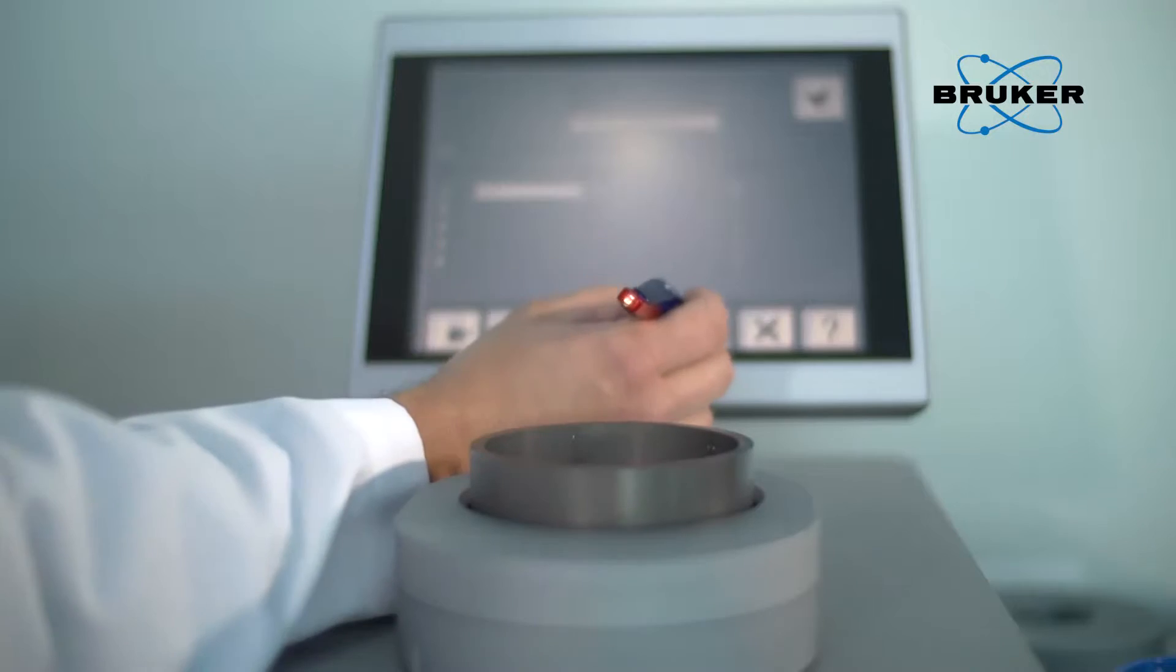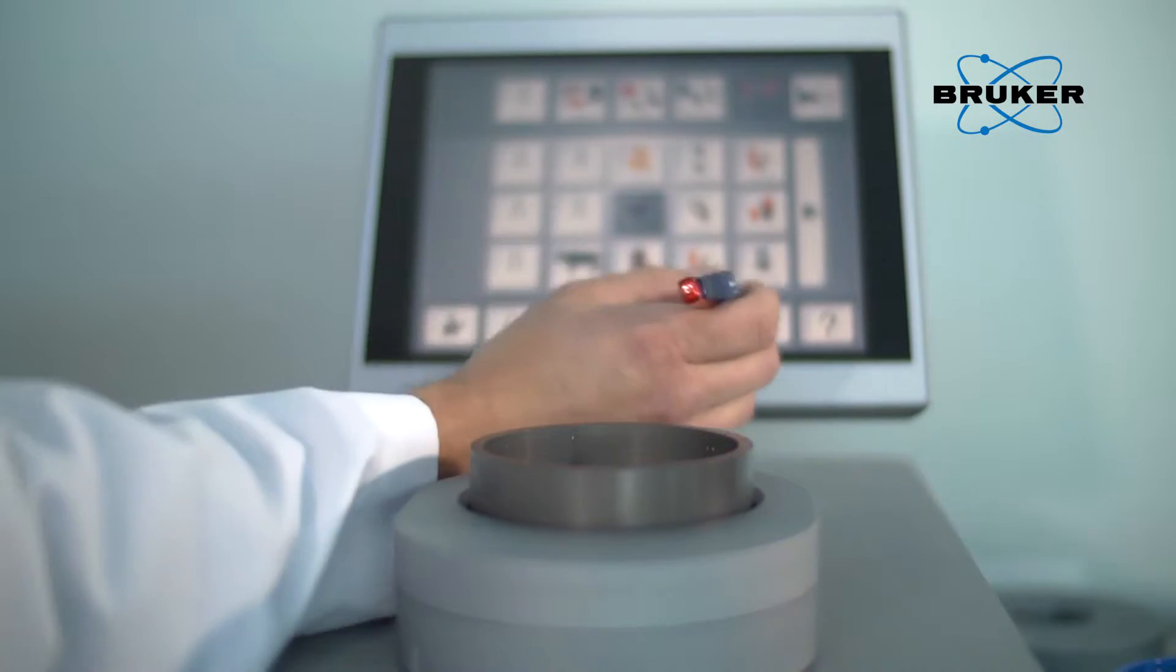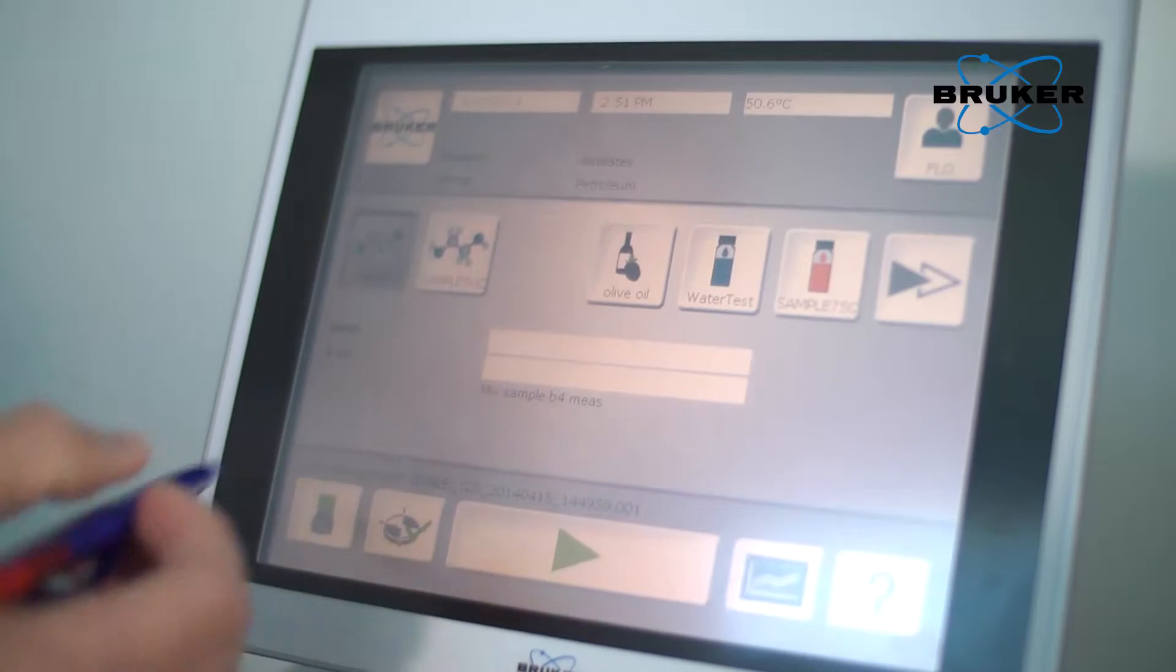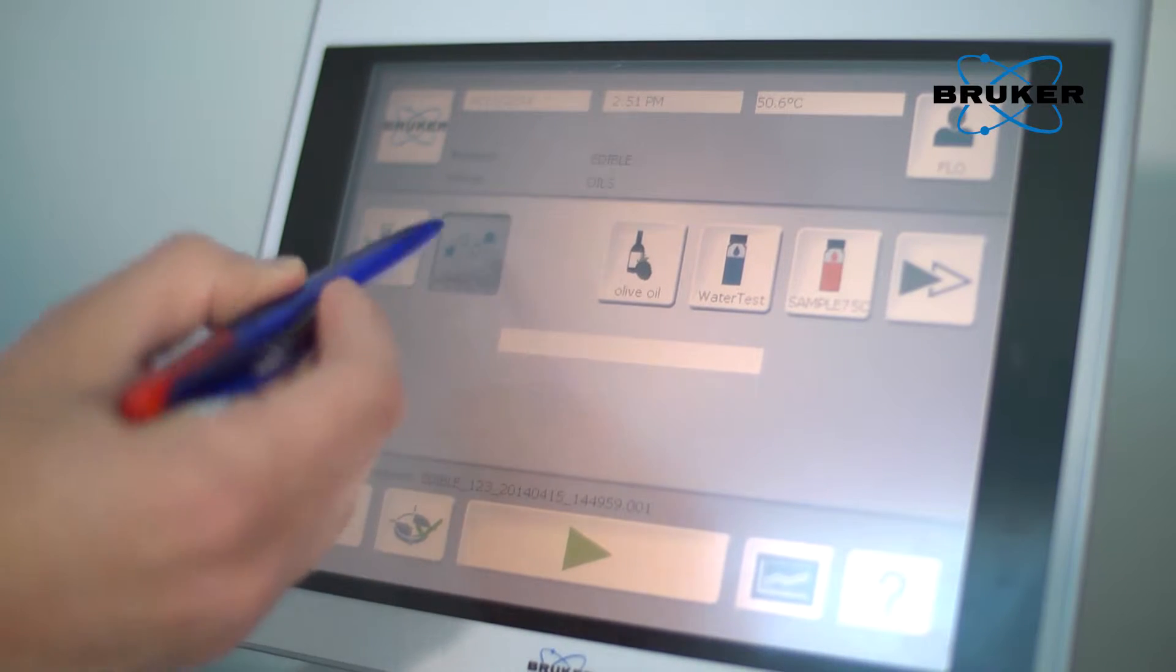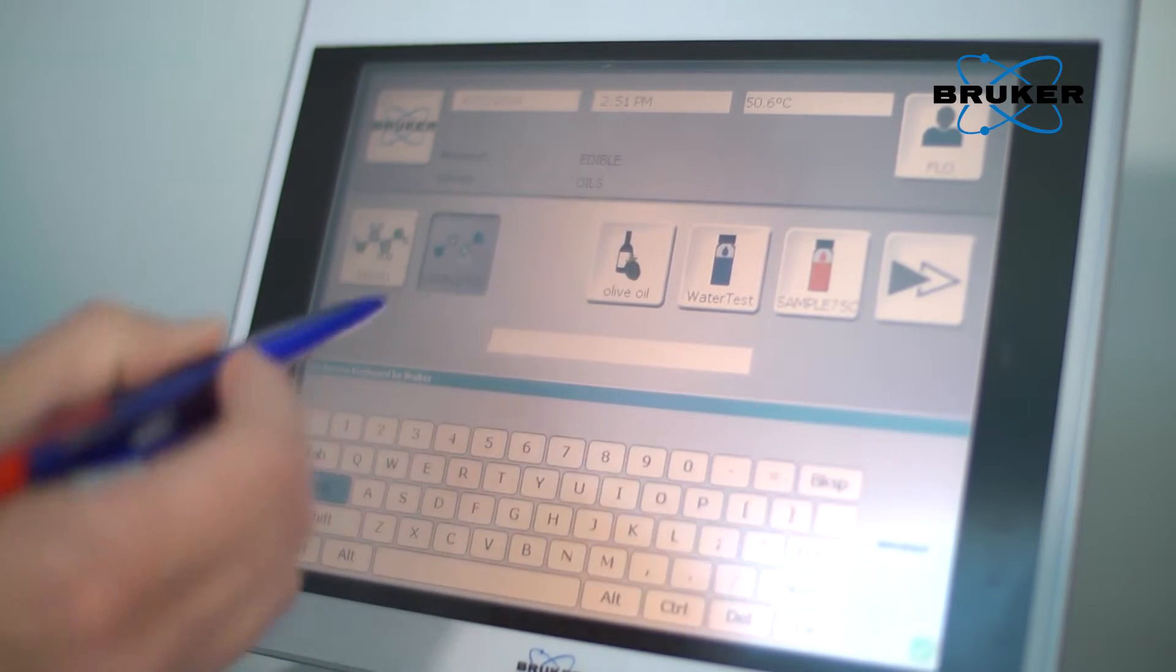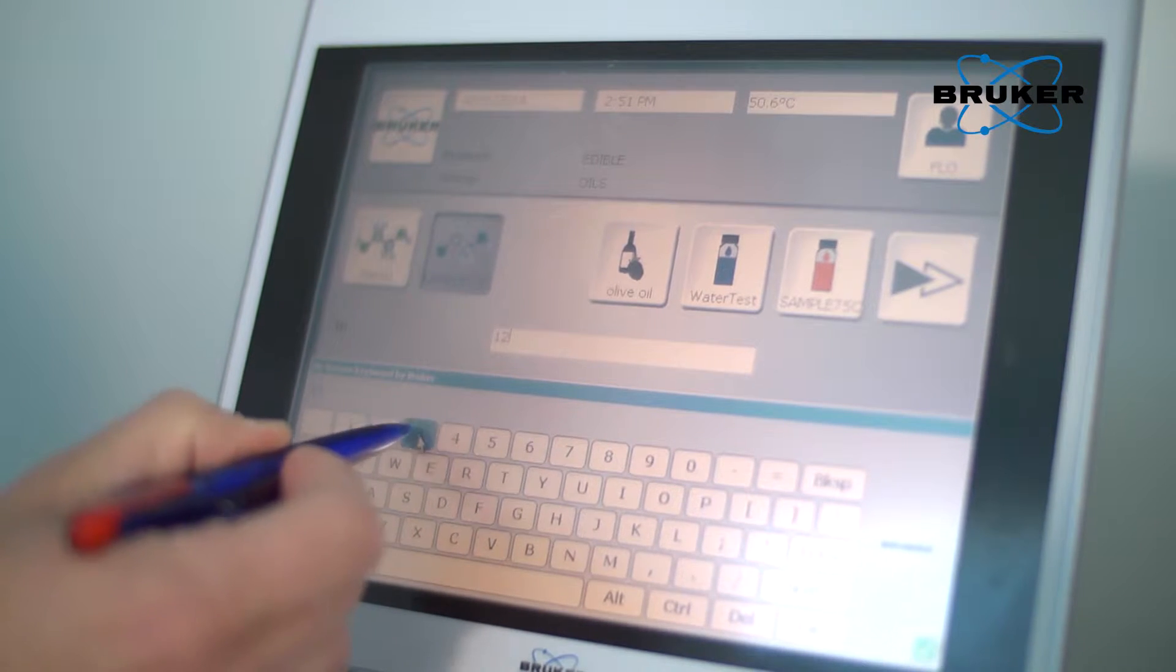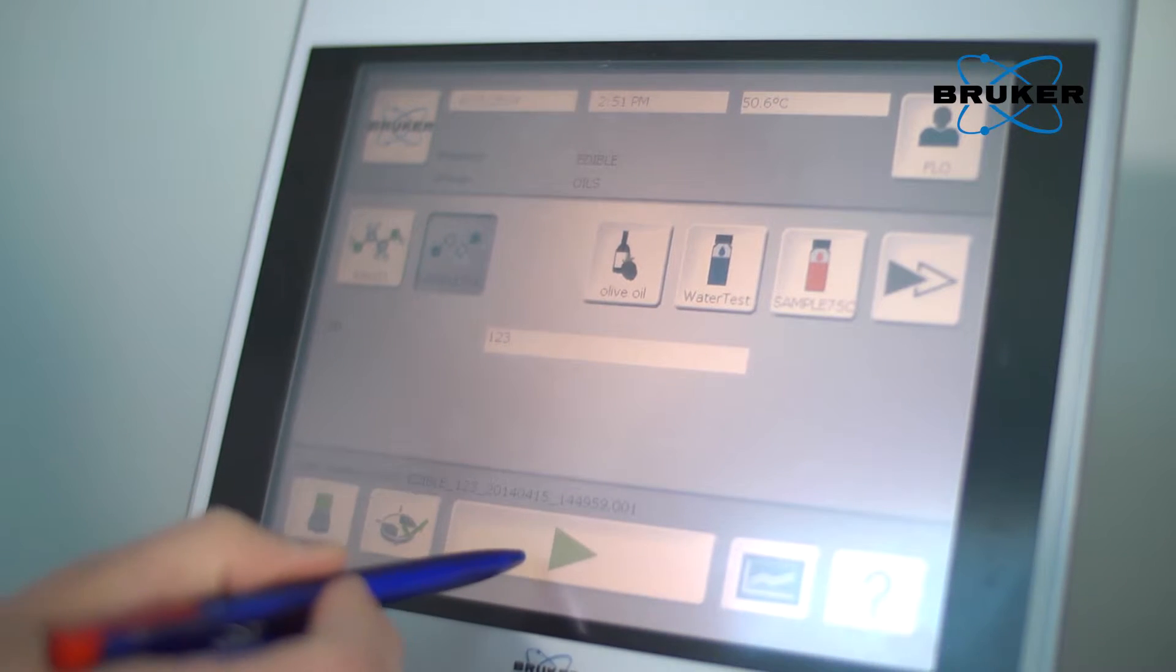The Tango software is a very powerful tool, and yet it was designed to be extremely easy-to-use software, making it ideal for quality control operations. The experience with the Tango software is similar to that of a modern tablet. Everything is icon-based, making it easy to identify the material that you want to analyze and simply touching the icon of interest and making a measurement.